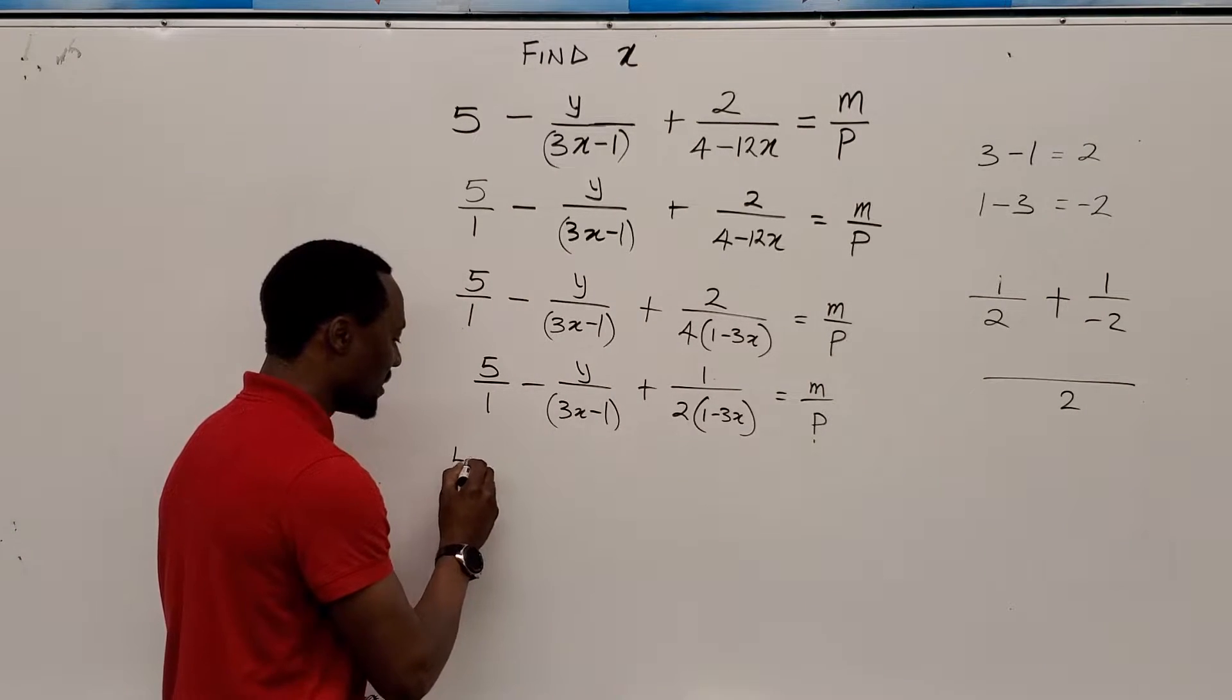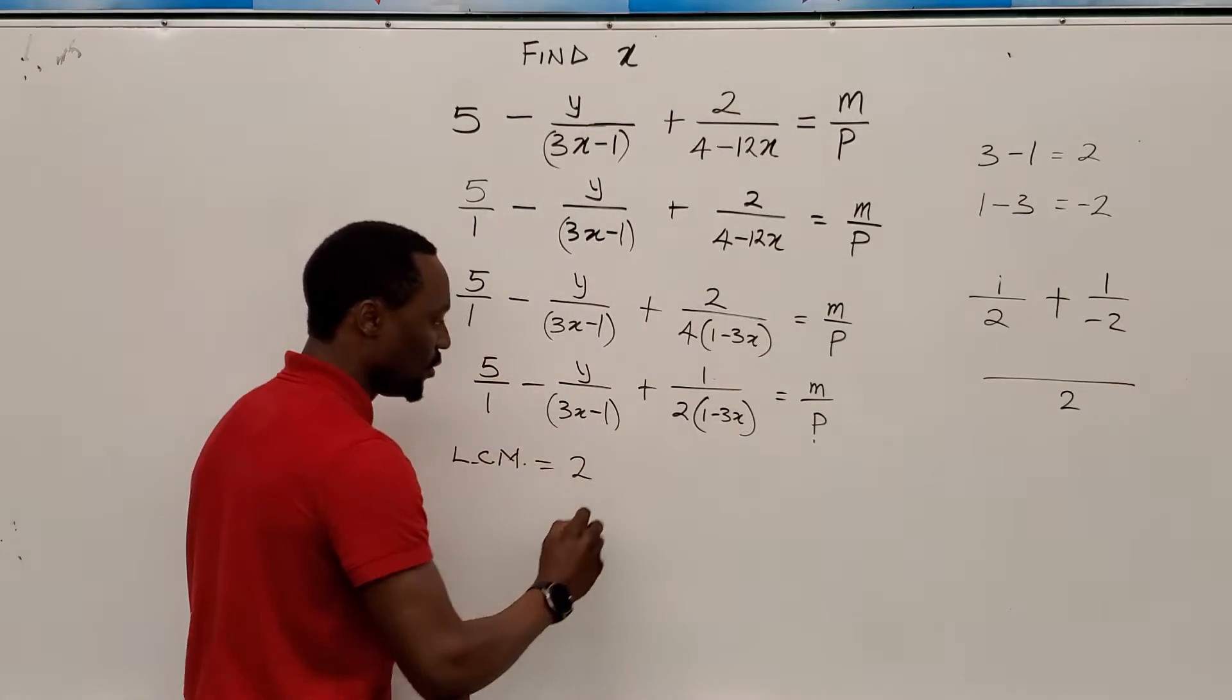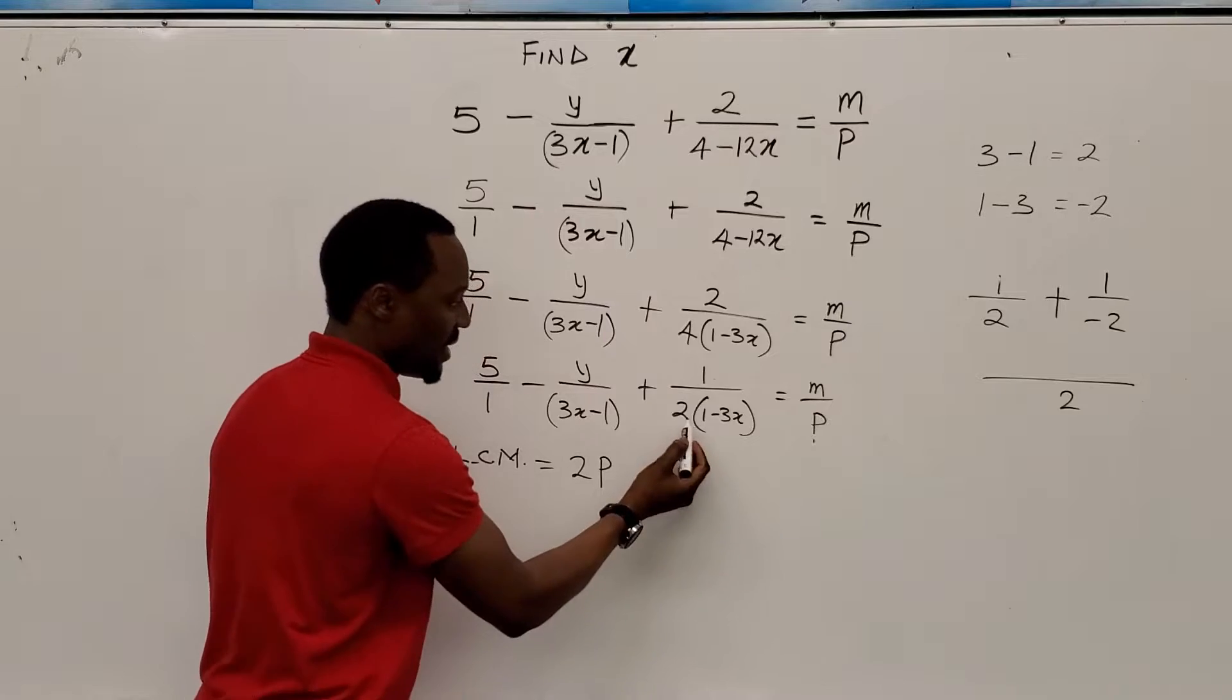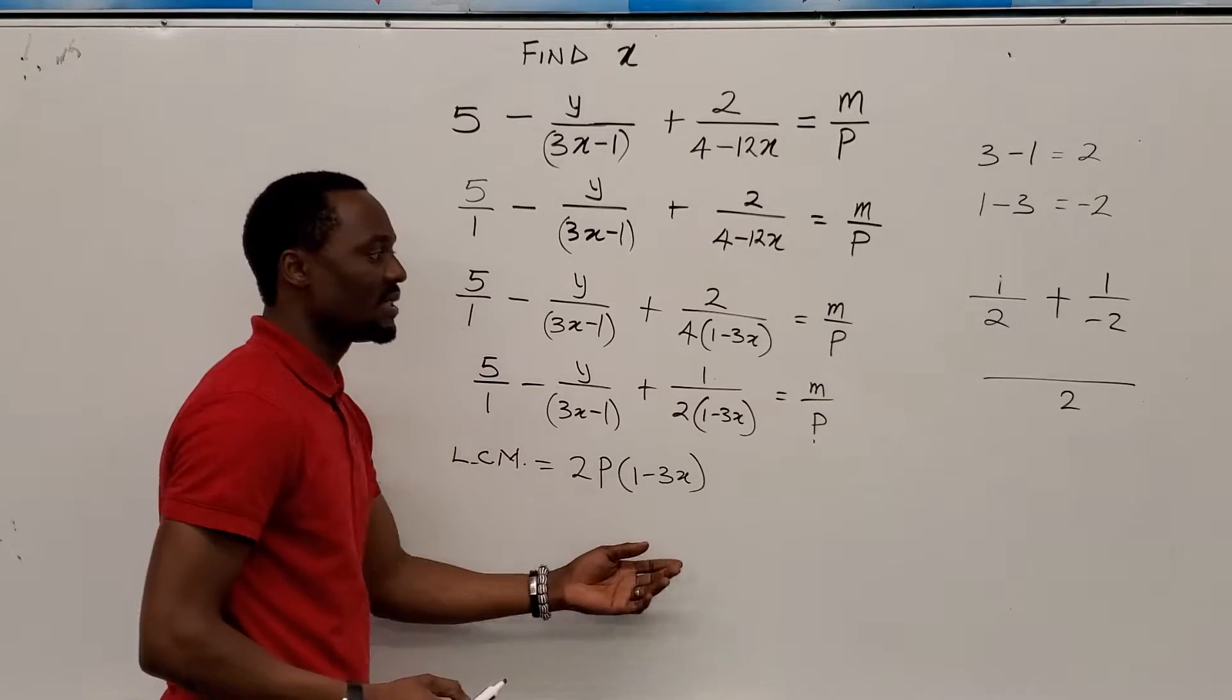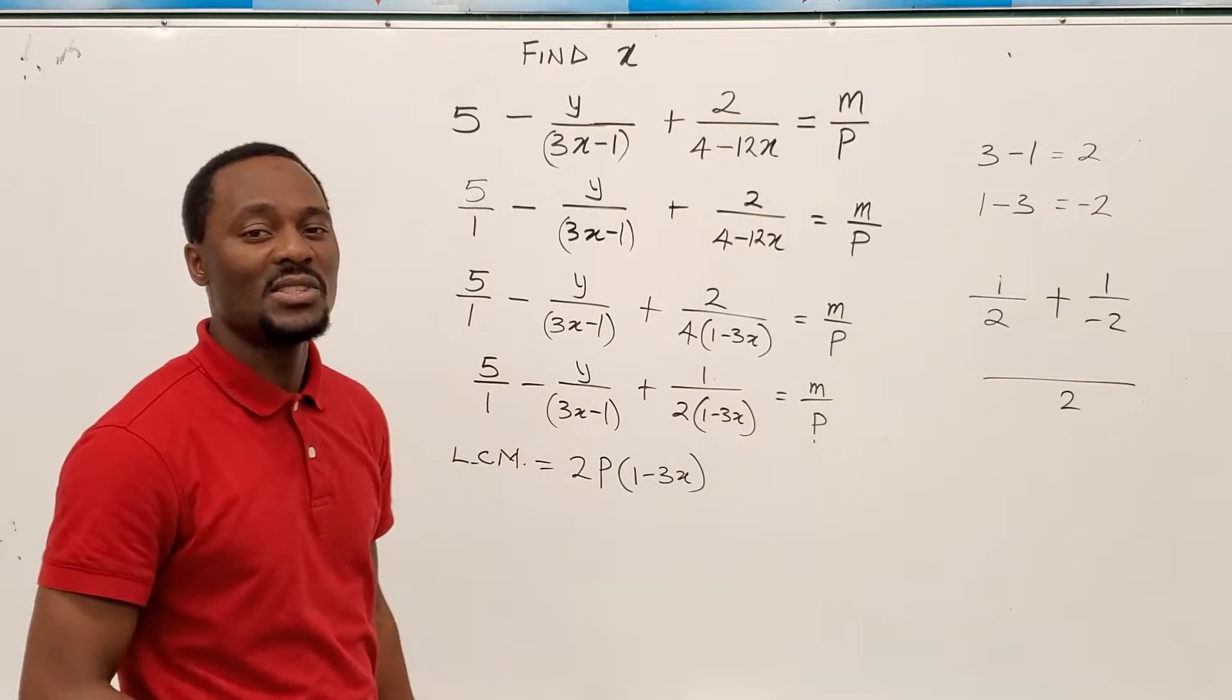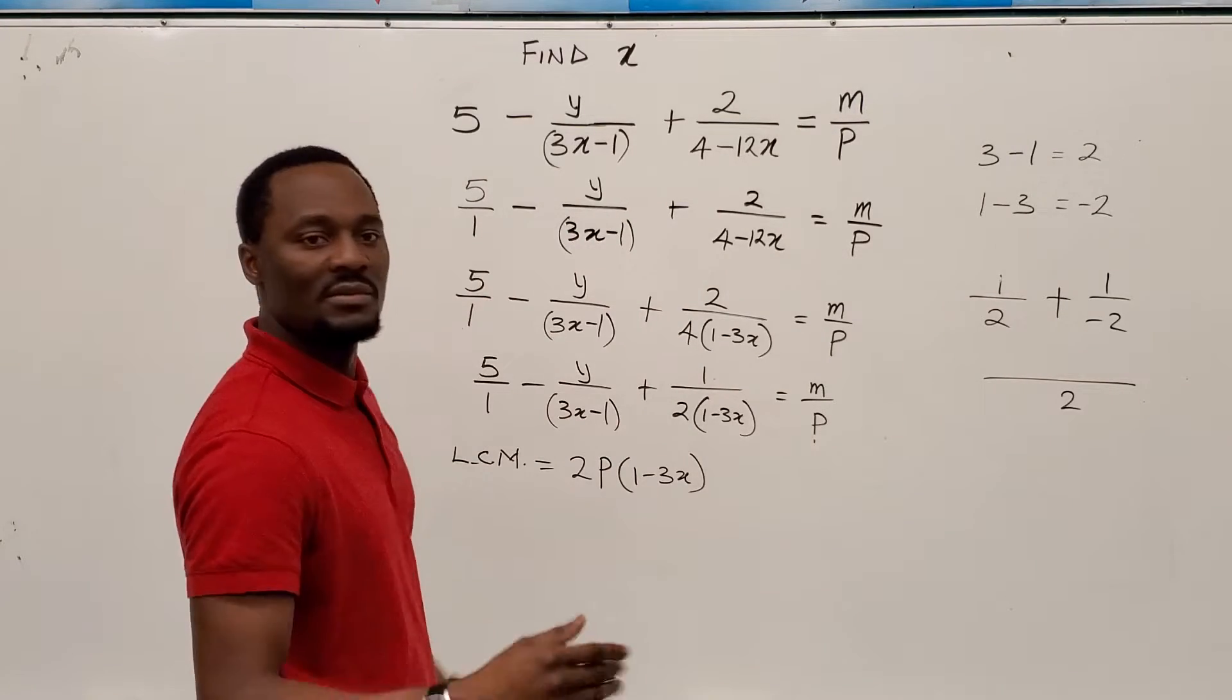So it's going to be my least common multiple LCM will be equal to, let's start with 2. We're going to take this, this one doesn't make any difference, we shouldn't write it. So that means 2, we take the P and we take this or we take this. Remember, it doesn't matter which one you pick, you will always get your answer. So I'm going to take this because it already has the 2 beside it. So I'm going to write 2P into 1 minus 3X. That's the least common multiple. The most important thing in solving any algebraic equation involving fractions is to find the LCM. Once you get the LCM, every other thing is you just multiply each term by the least common multiple and your problem is half gone.